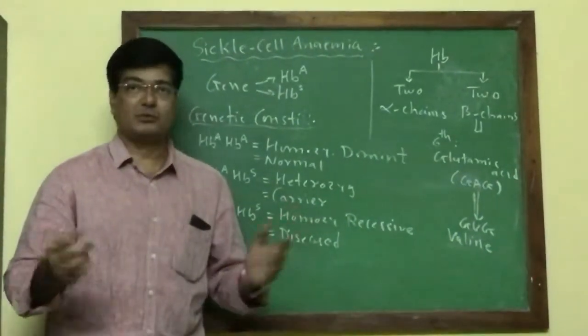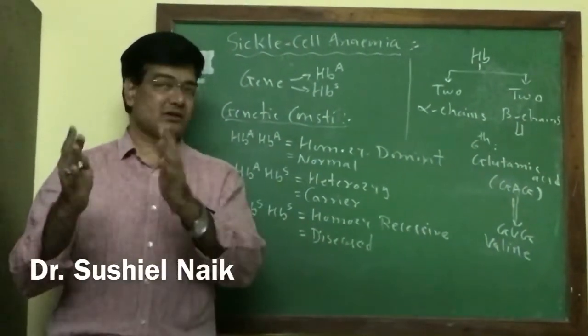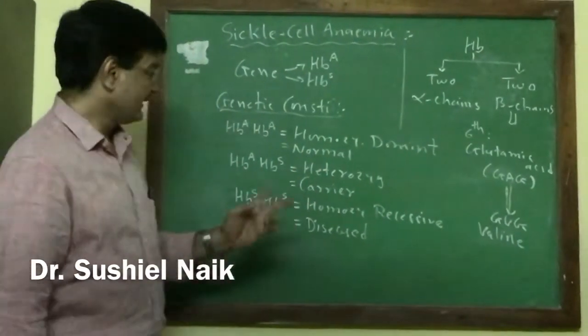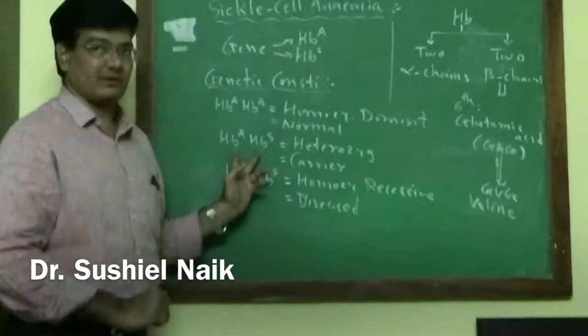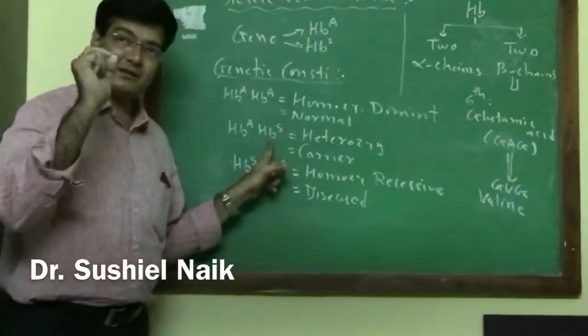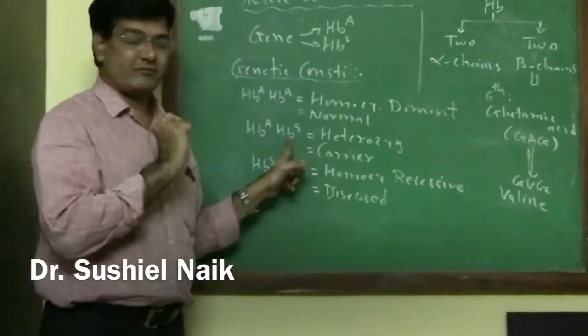Sickle cell anemia is also considered a case of co-dominance. In the condition of the carrier individual, HBA is a normal gene and HBS is a diseased gene. HBA produces hemoglobin which is normal.